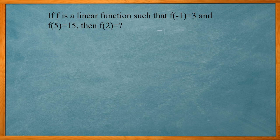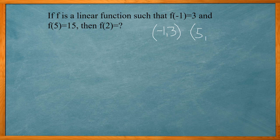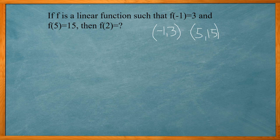Basically they're giving us two points on the line. Negative 1, 3, and 5, 15. Those are two points on the line.